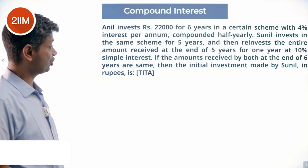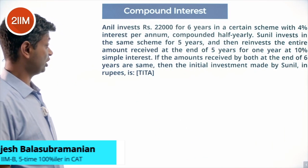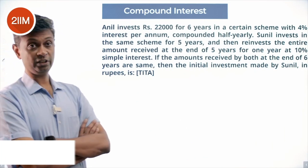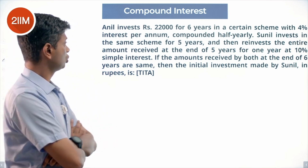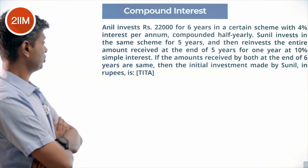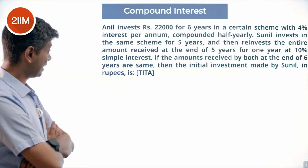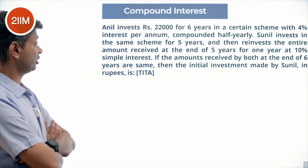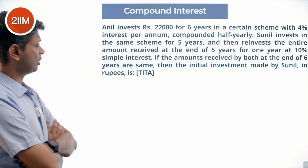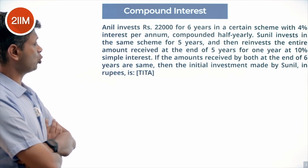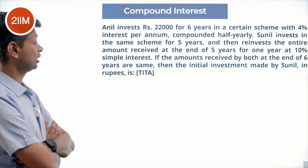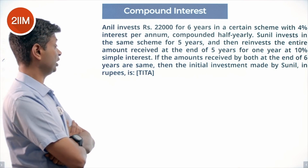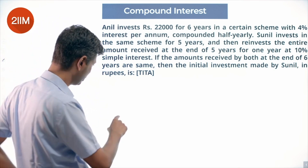Anil invests ₹22,000 for 6 years in a certain scheme with 4% interest per annum, compounded half-yearly. Sunil invests in the same scheme for 5 years, then reinvests the entire amount received at the end of 5 years for 1 year at 10% interest. The amounts received by both at the end of 6 years are the same. Find the initial investment made by Sunil in rupees.